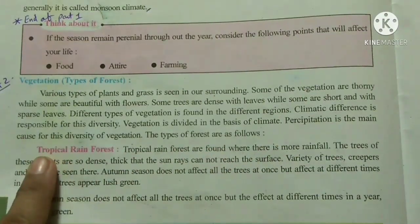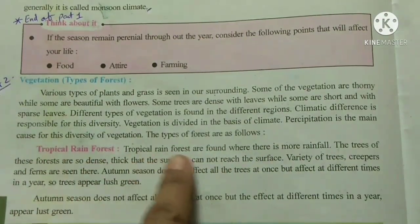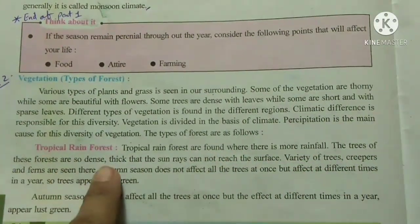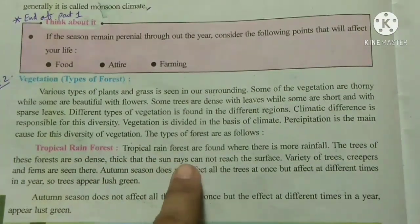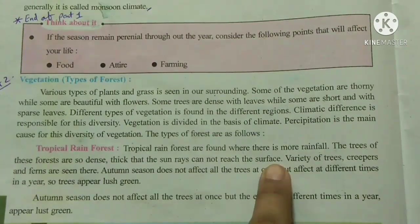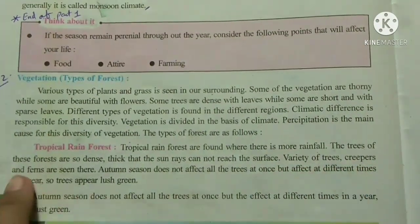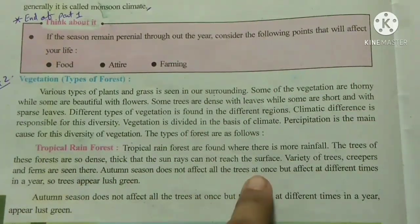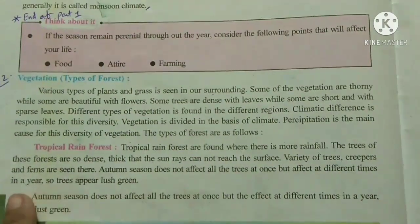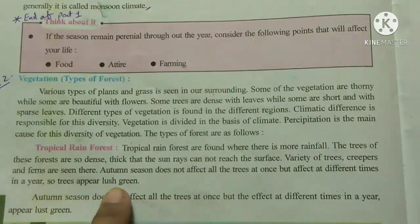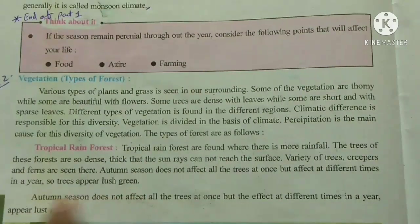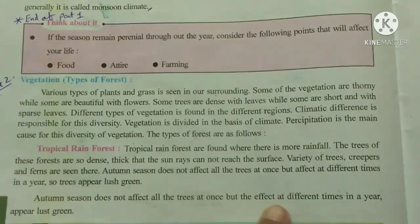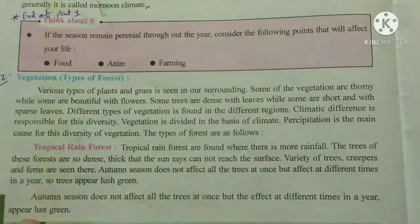The first type of forest is tropical rainforest. Tropical rainforests are found where rainfall is heavy. The trees are so dense and thick that sun rays cannot reach the surface. A variety of trees, creepers and ferns are seen here. The autumn season does not affect all the trees at once, but affects different trees at different times of the year, so the trees appear lush green throughout the year.